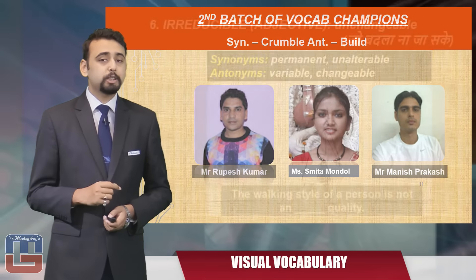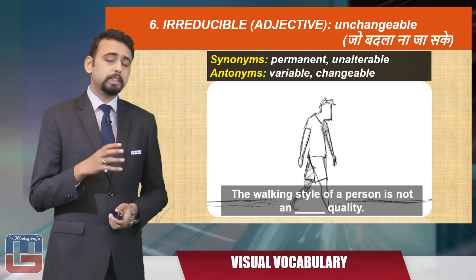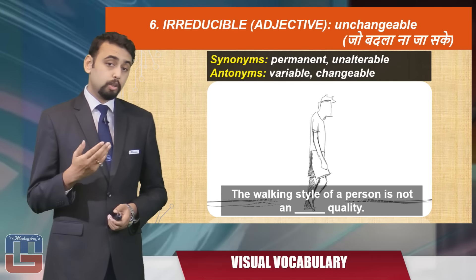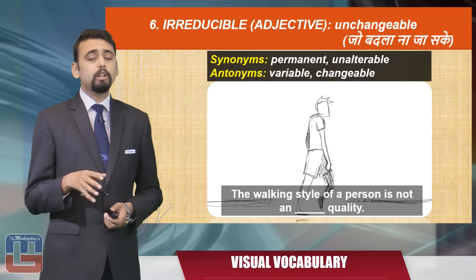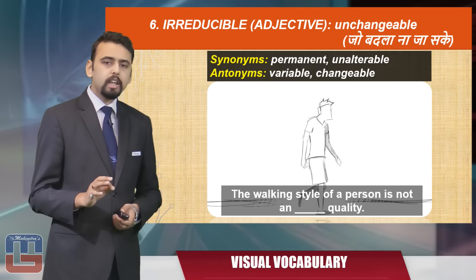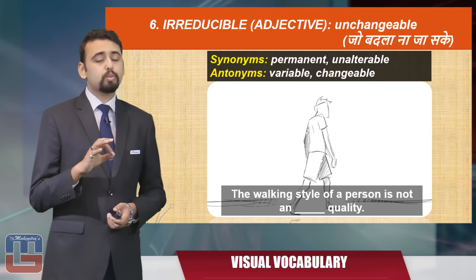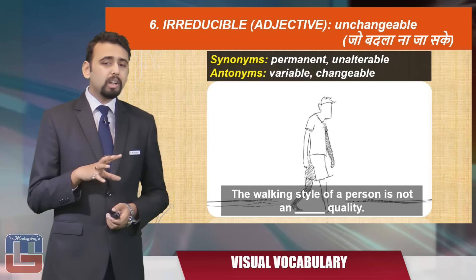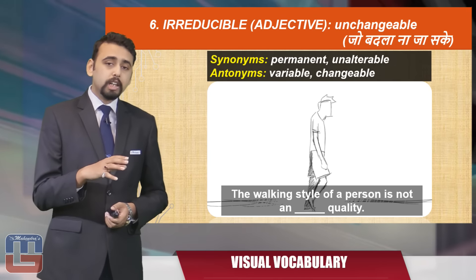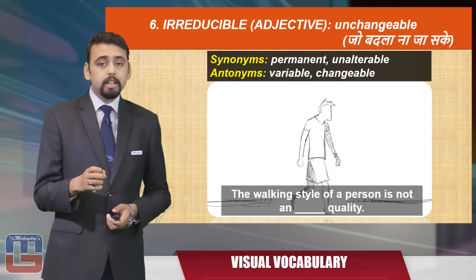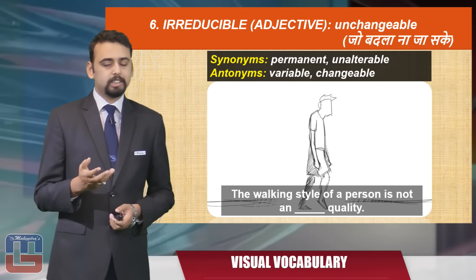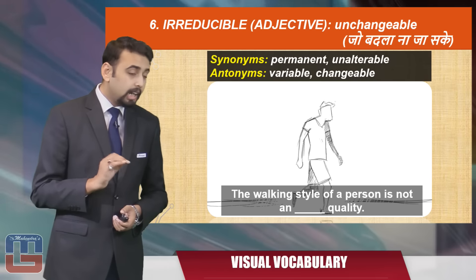The sixth word is 'irreducible,' an adjective meaning unchangeable. The synonyms are 'permanent' or 'unalterable,' and the antonyms are 'variable' or 'changeable.' Here's an image — the walking style of a person is not an unchangeable quality. Soldiers, through proper training and grooming, changed their casual walking style. The sentence becomes: 'The walking style of a person is not an irreducible quality.'